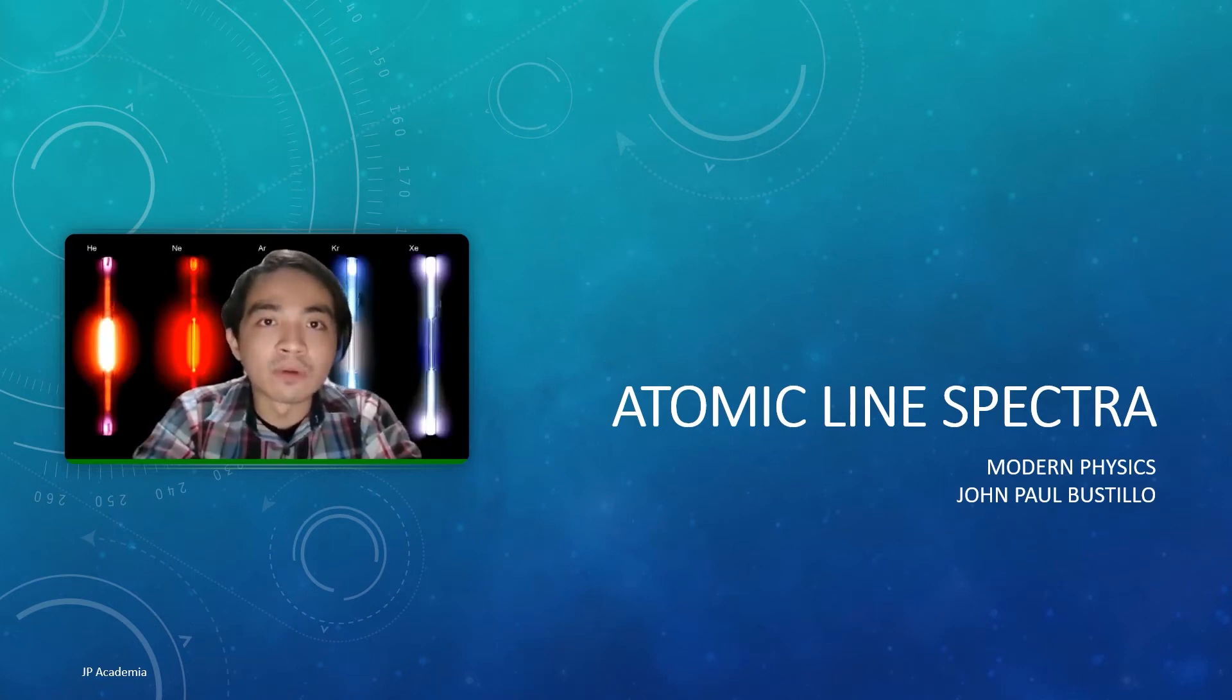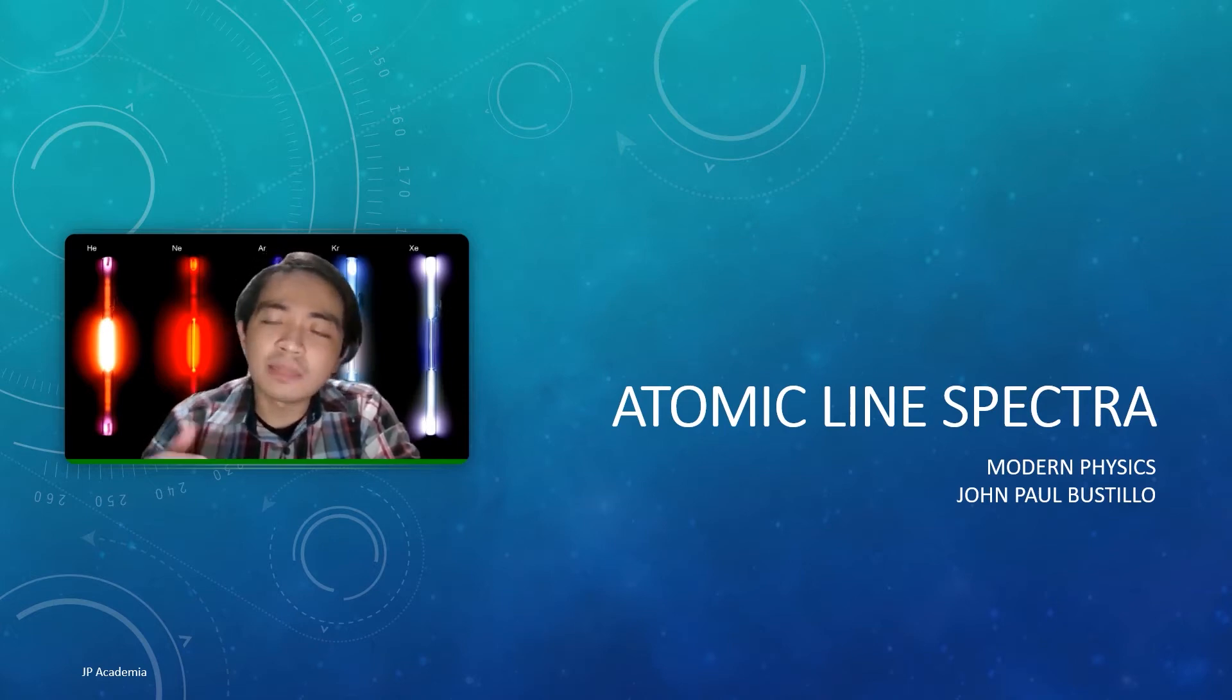Alright, so, hi everyone! The discussion of atomic line spectra is significant in the hypothesis of Bohr that each atom is able to exist only on specific values of internal energy, which refers to the energy levels. It cannot have an energy somewhere in the middle of the two energy levels. Let's start!